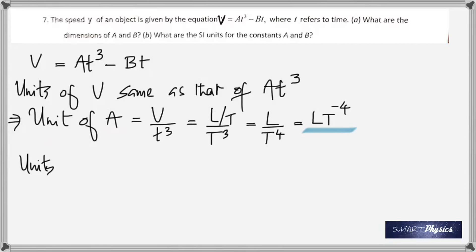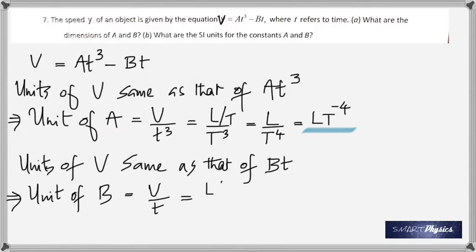Similarly, the unit of B T should be the same as that of velocity. And, so you can rearrange and B should have the same dimension or unit as that of v by T. And, the dimension of velocity is again L by T by T gives you L by T squared, which is L T raised to minus 2. And, the units are M S raised to minus 4 and M S raised to minus 2.